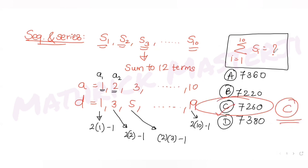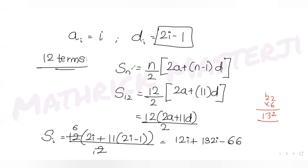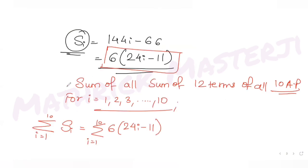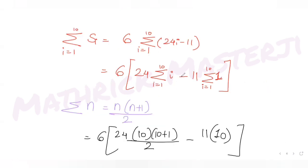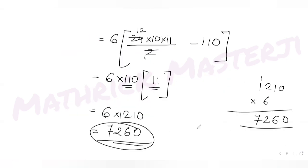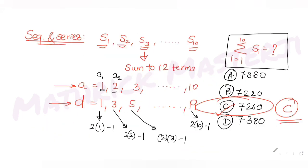I hope you've understood how to solve this type of question dealing with the sum of multiple arithmetic progressions whose first terms and common differences are both in a pattern. We identified the pattern, found a general formula for the sum of 12 terms of the i-th AP, then used summation to get the final answer, which is option C — 7260.